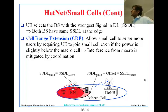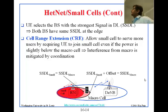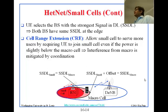Normally the mobile will select the main cell since the signal is stronger from there. However, it may be better for the system that this mobile connects to the relay node, even though the relay node's power is less. This decision is made not based on power alone, but on global cell-wide considerations.